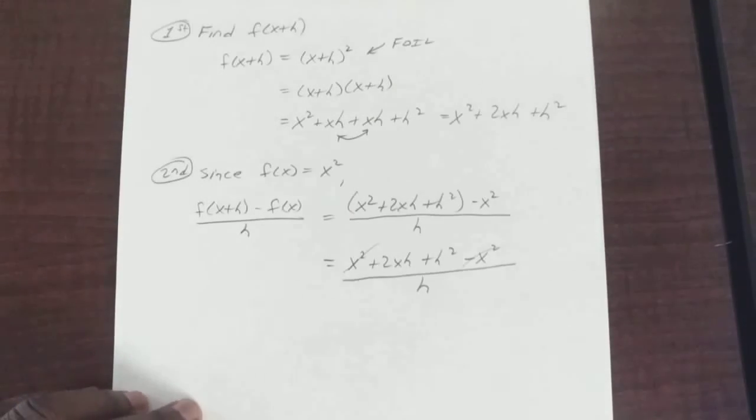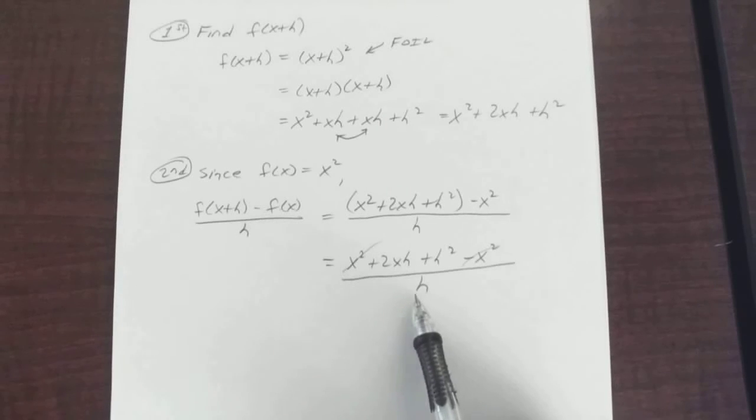Can we take the common factor of the h? Yep. And actually, when you're done, if you don't find some way to cancel out the h on the bottom, then you've messed up somewhere. Because each time you do this, that h in the bottom should disappear.